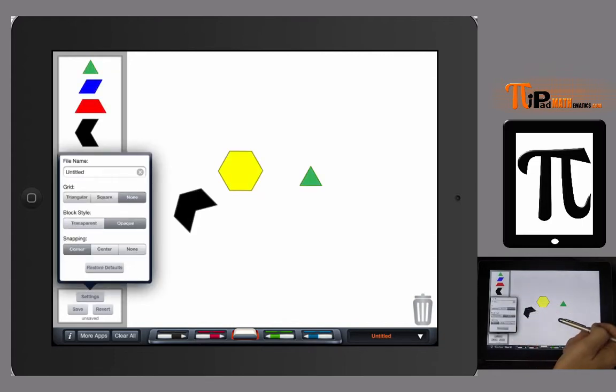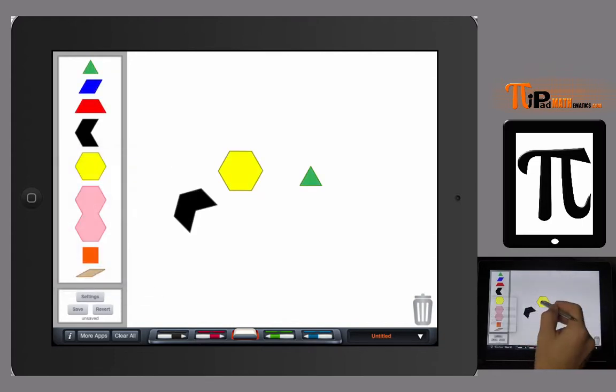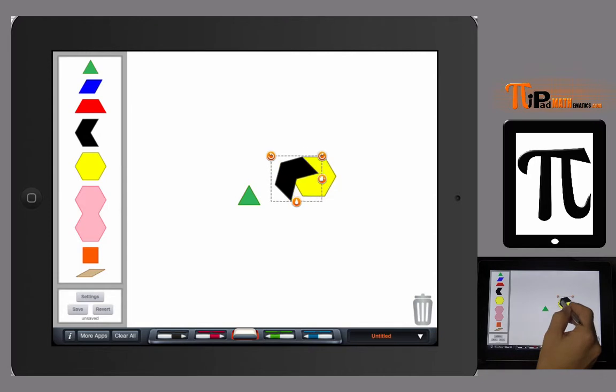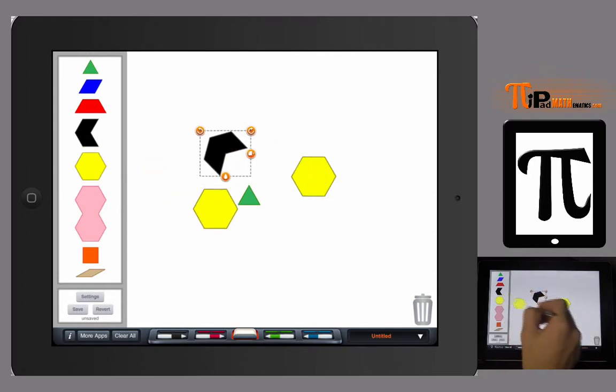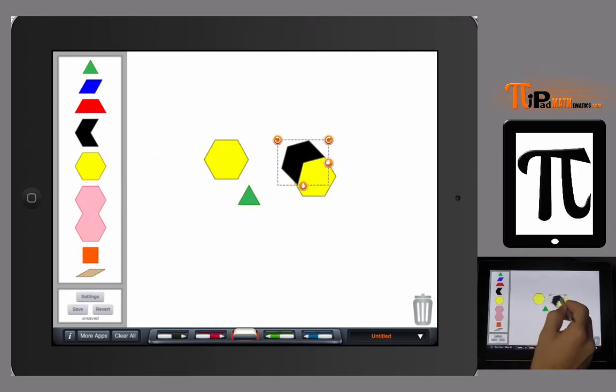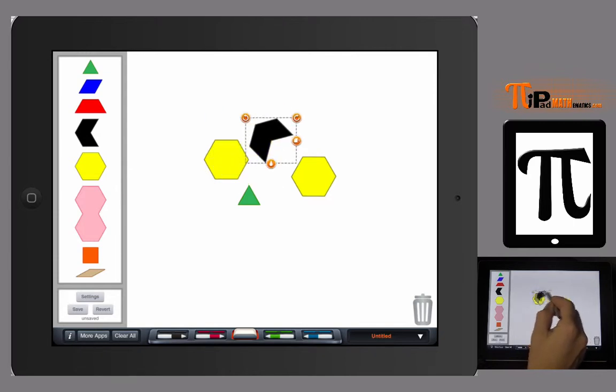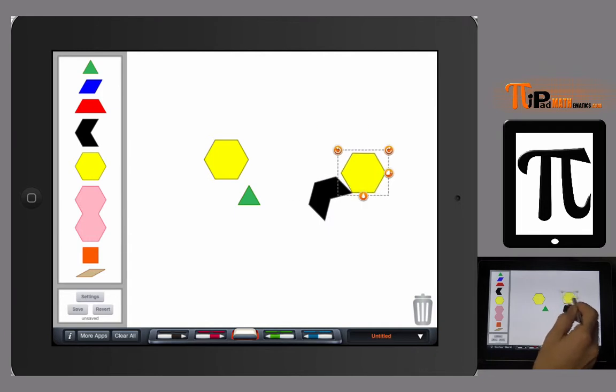In the settings we can make the shapes opaque so they're solid, and when one overlaps another you don't see through it. Order is important, so whenever a piece is placed onto the board—like I move the black one on top of the yellow hexagon—but then I can take the yellow hexagon and move it on top.